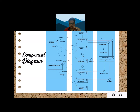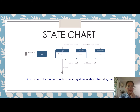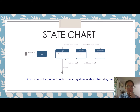Next, we will talk about the state diagram. My name is Ko Singi and my matrix number is 66399. I will present the state chart. The figure shows the overview of the Heirloom Noodle Corner system in the state chart diagram. When the system is turned on, it will be in an idle state. If any trigger is made, the system will change its current state from idle to login state to read user input. The login state of the system will be shown in the next slide.